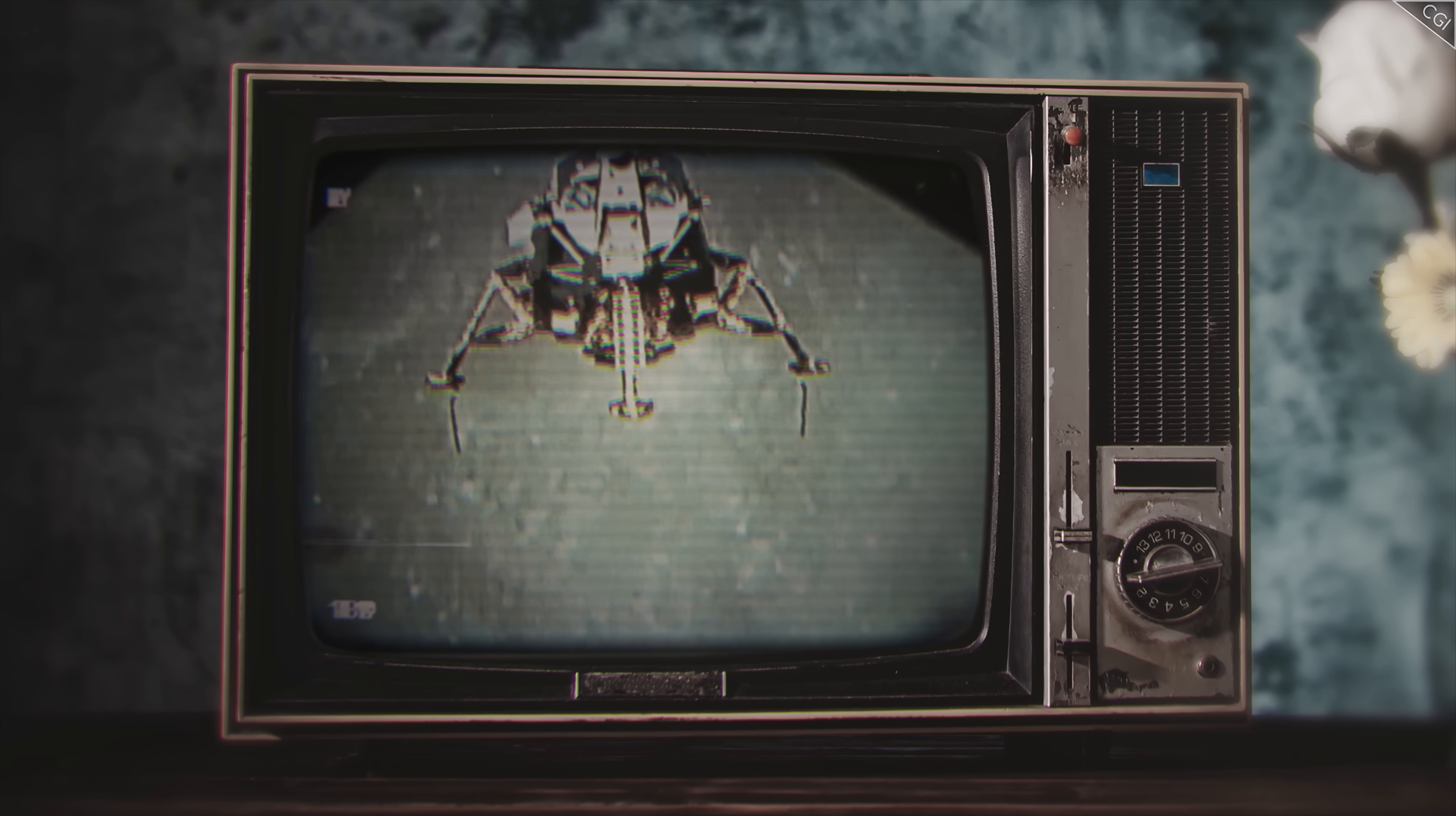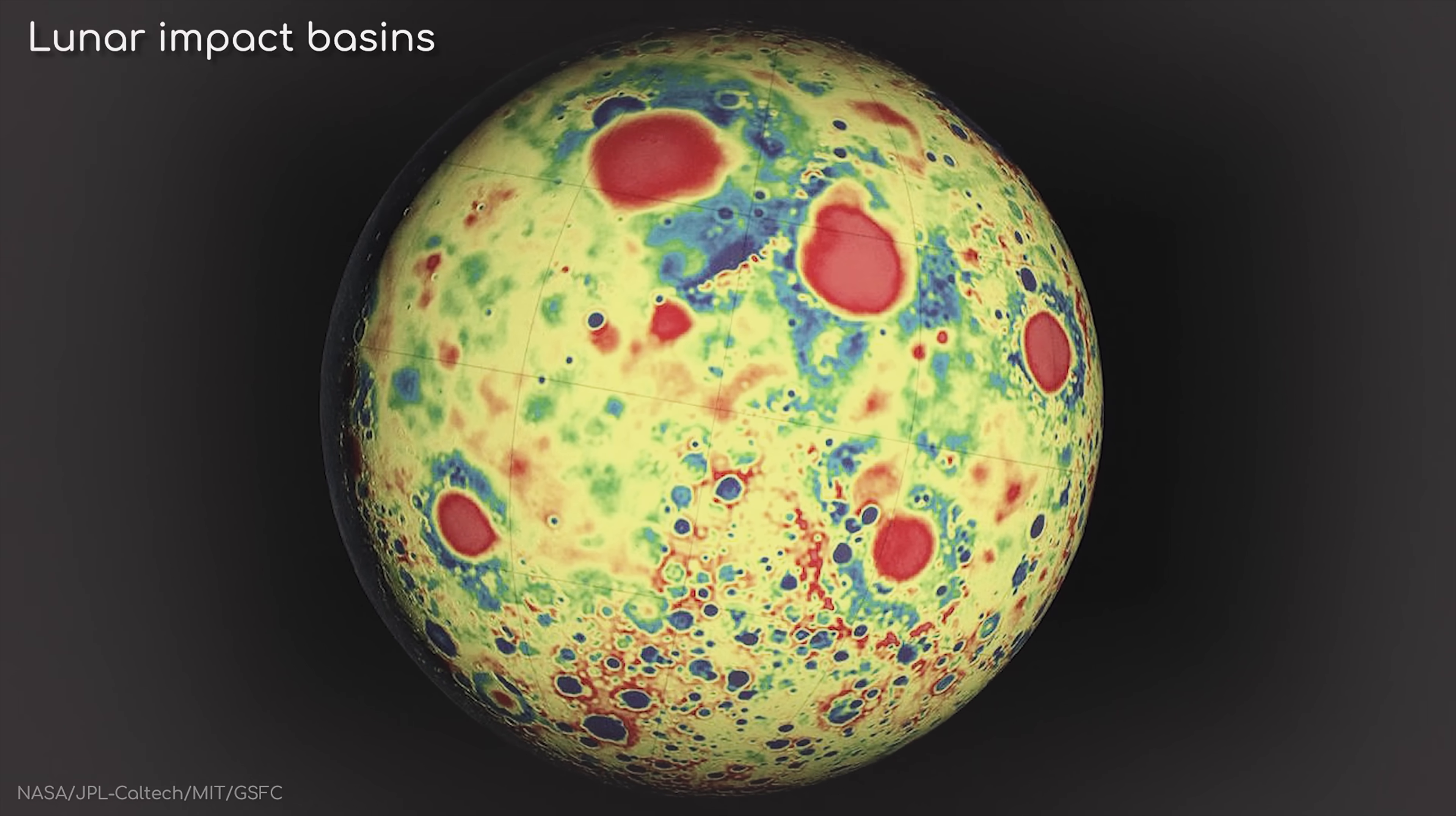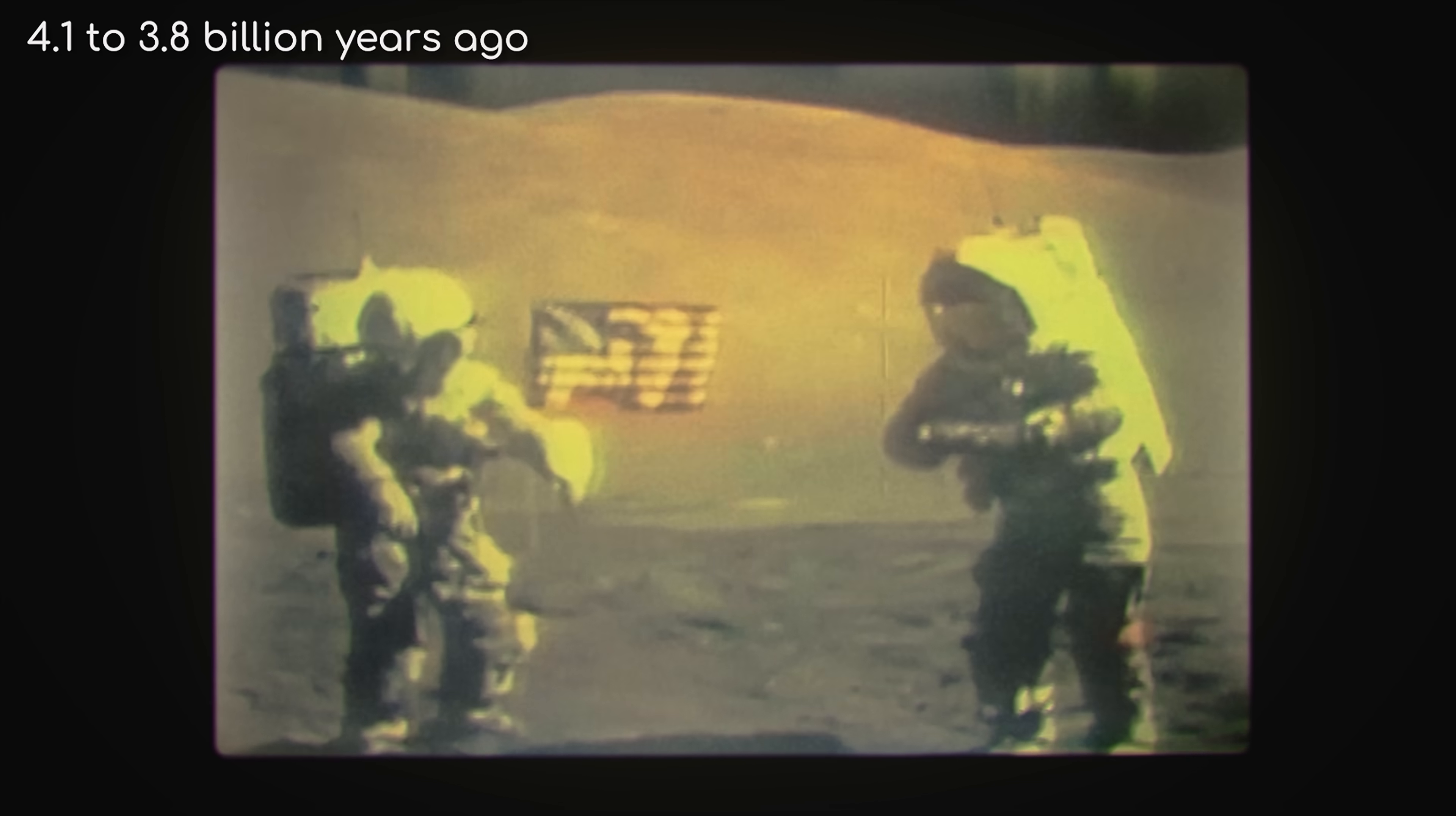When the Apollo astronauts came home from the moon, the rocks they brought with them told a surprising story. The astronauts had brought home samples containing impact melt, rocks that had superheated into magma due to being hit by a meteorite, which had later gradually cooled back into solid form. But while the Apollo team had collected these reconstituted rocks from different areas and craters on the near side of the moon, almost all of them were dated to around 4.1 to 3.8 billion years ago, with very few showing older impacts.